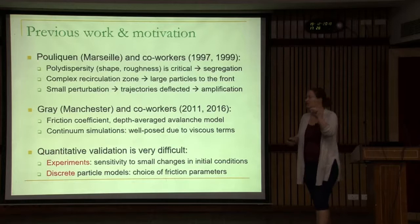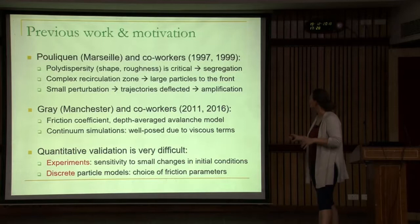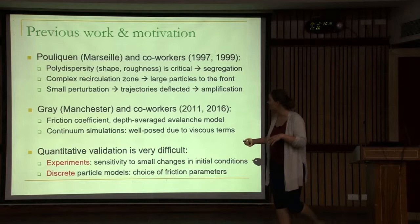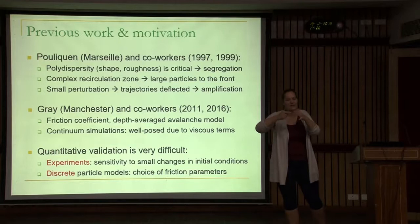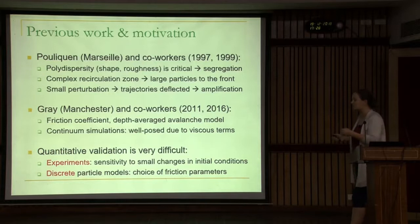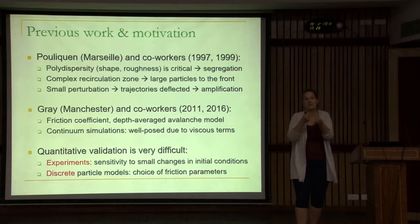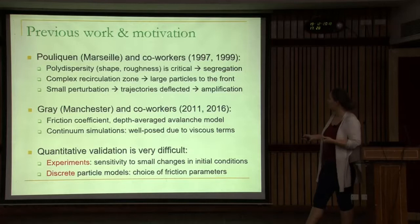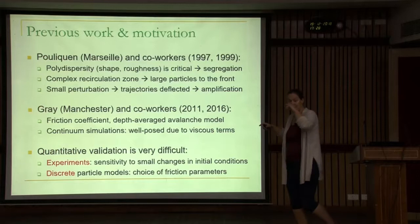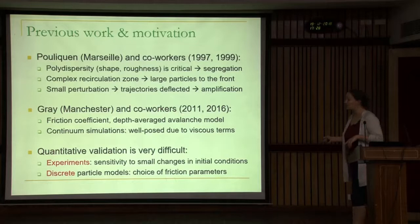Poliquen's name was mentioned yesterday. He did very good work about 20 years ago. Poliquen and co-workers found that polydispersity is an important characteristic — therefore you get segregation. There's also a complex recirculation zone: large particles go to the front and are more angular, so they experience more friction and get a slightly different response to the base. You get amplification of any small perturbation and therefore the front breaks up.